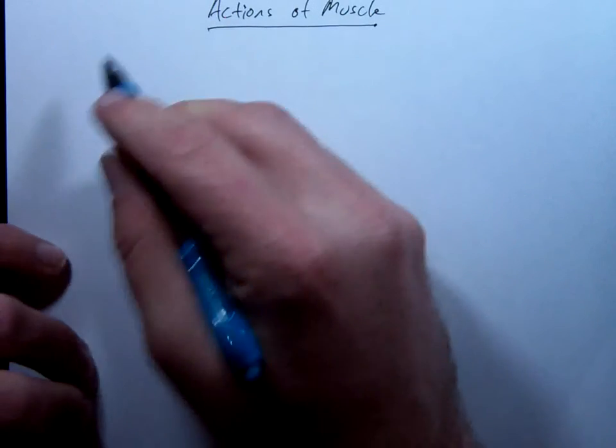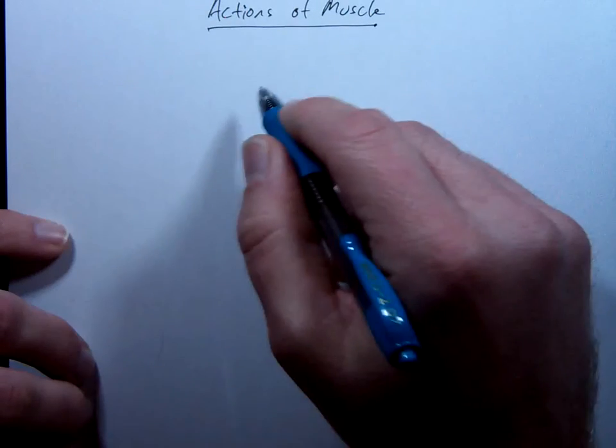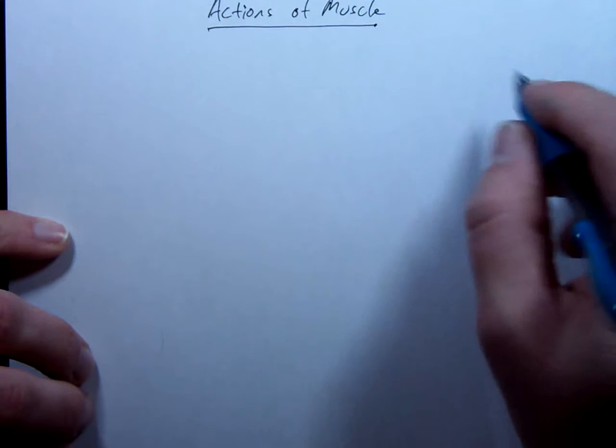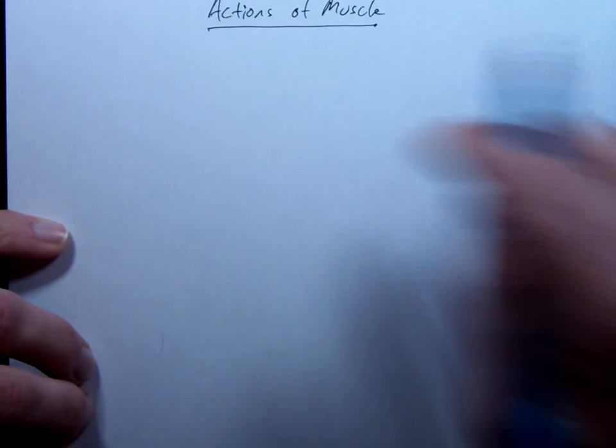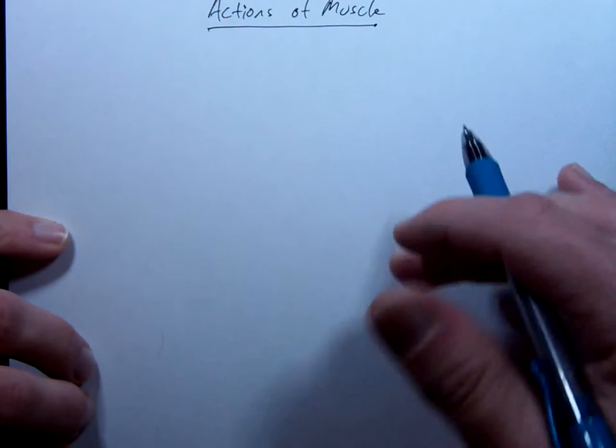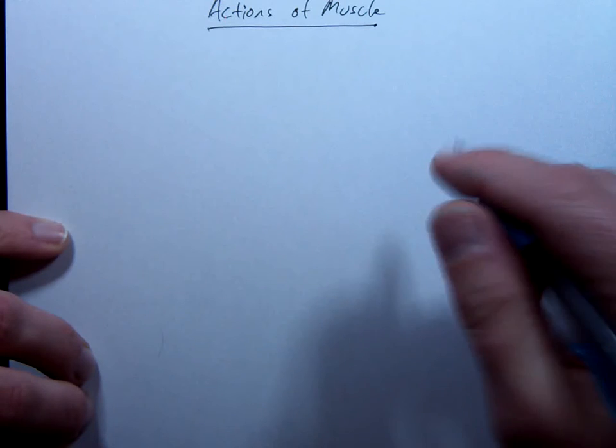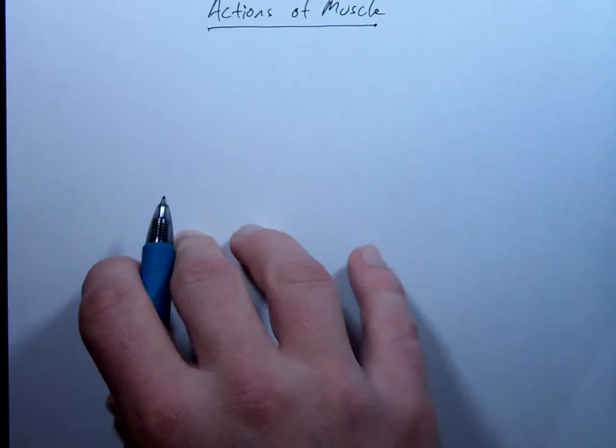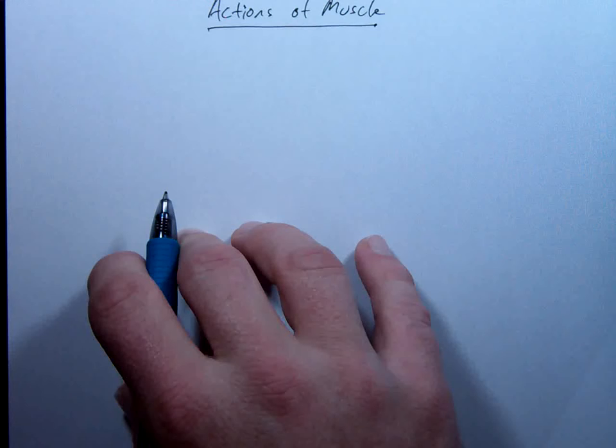The title of this lecture is Actions of Muscle. We need to be able to figure out what it is that the muscles are actually doing. This will be handy because when you know this, a lot of the muscles are named for what they do, or named for what they're attached to. So in either way, it's good to know these things.